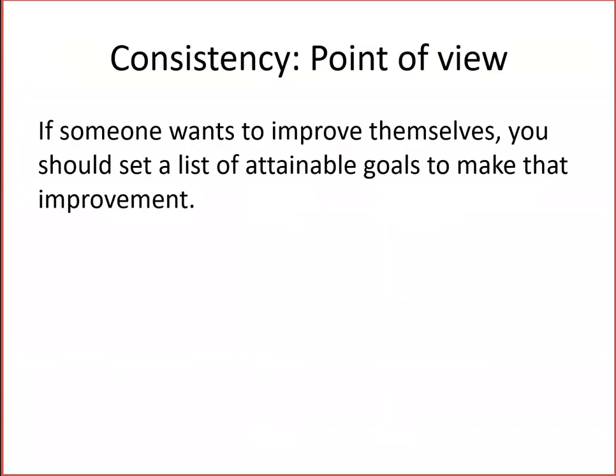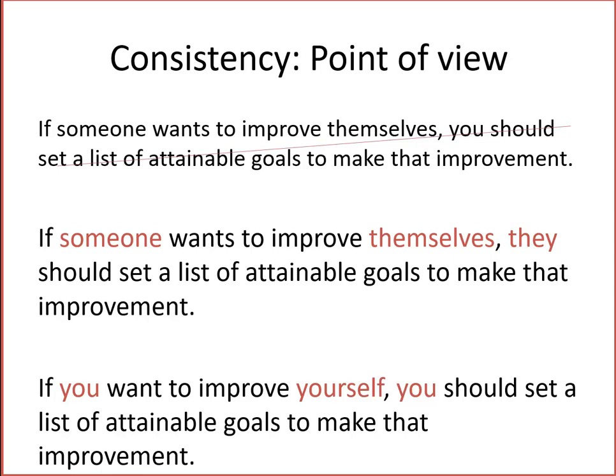Now let's look at consistency of point of view. Here's a simple sentence which is inconsistent in point of view — pause the movie while you fix it. Notice that first it refers to "someone" and "themselves", and then it refers to "you". Here I've suggested two improvements: the first is consistent from the point of view of "someone", and the second is consistent from the point of view of "you".